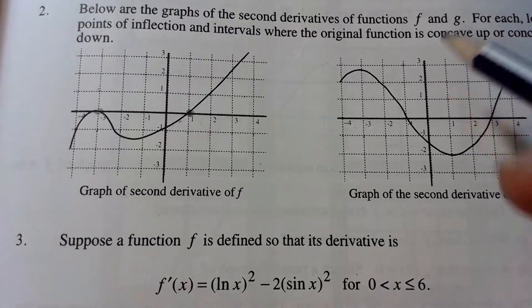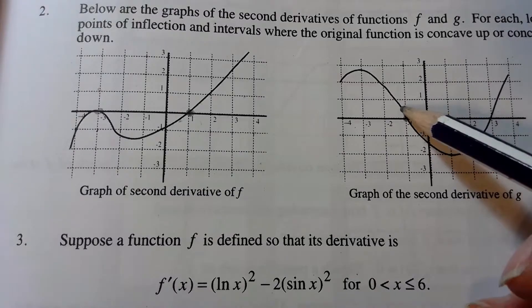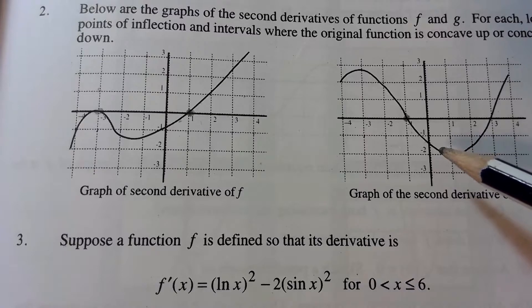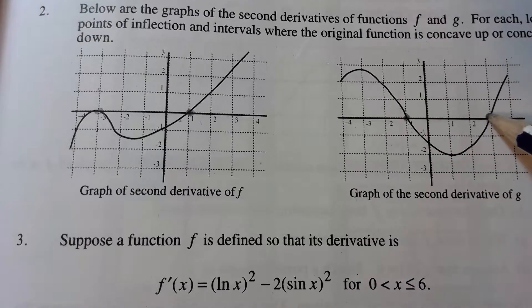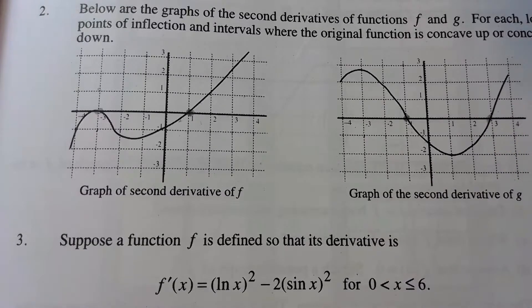Likewise, this graph of g, we've got a zero here, and lo and behold, at x equals negative one, the sign's changing. It's going from positive to negative. So that means on the graph of f, I'll have an inflection point, and also at x equals three, the second derivative is changing sign, and so I would expect an inflection point at the point x equals three on the graph of f.